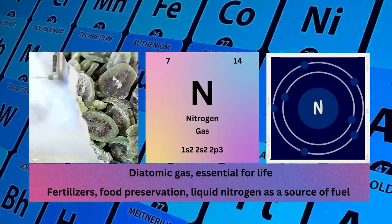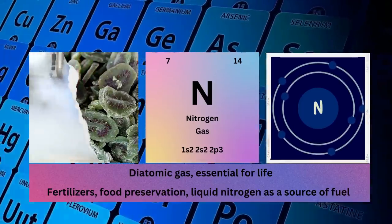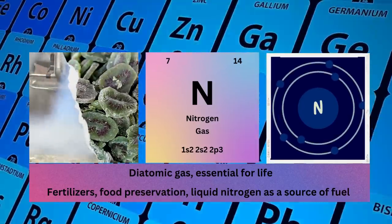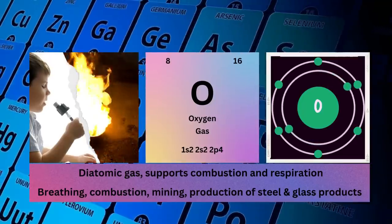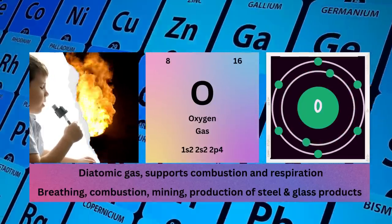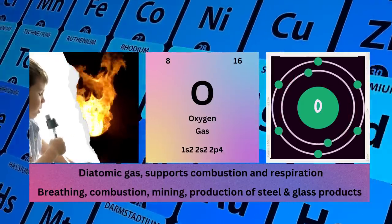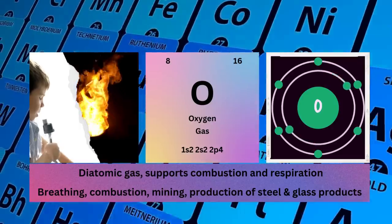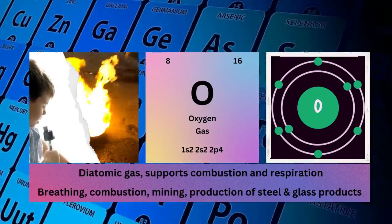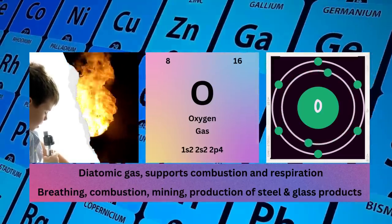Electronic configuration 1s2 2s2 2p4. Physical properties: diatomic gas, supports combustion and respiration. Oxygen uses: breathing, combustion, mining, production of steel and glass products.